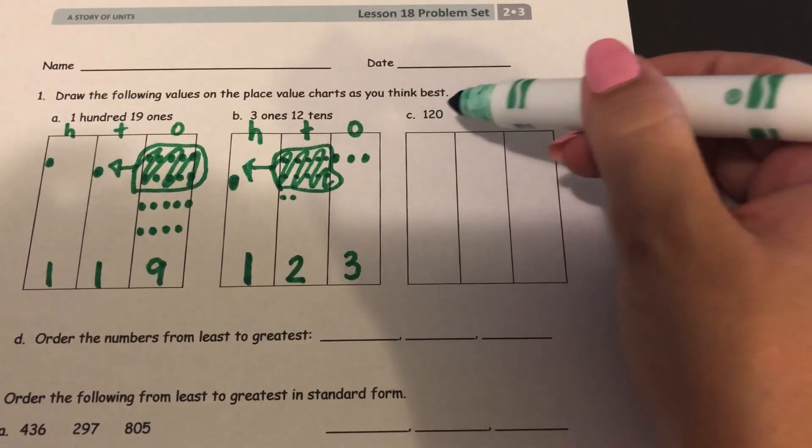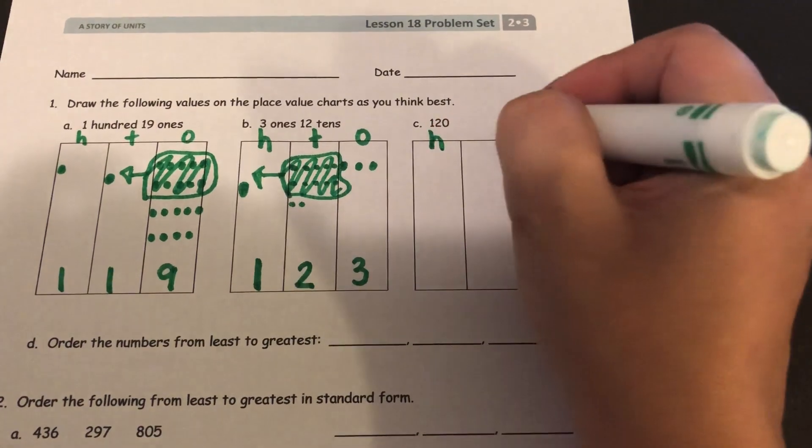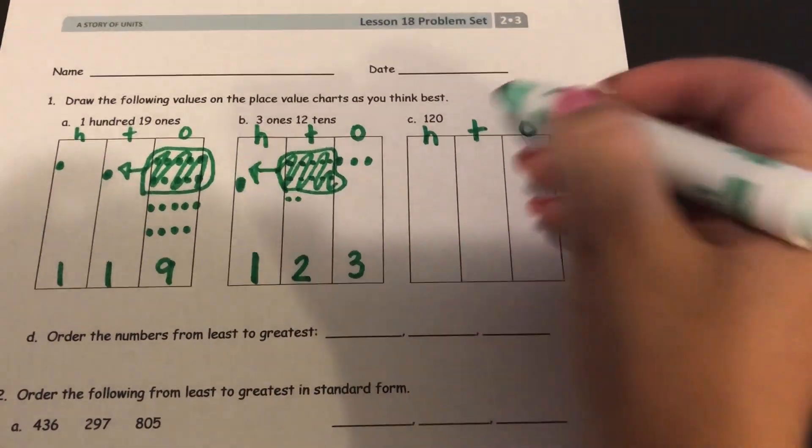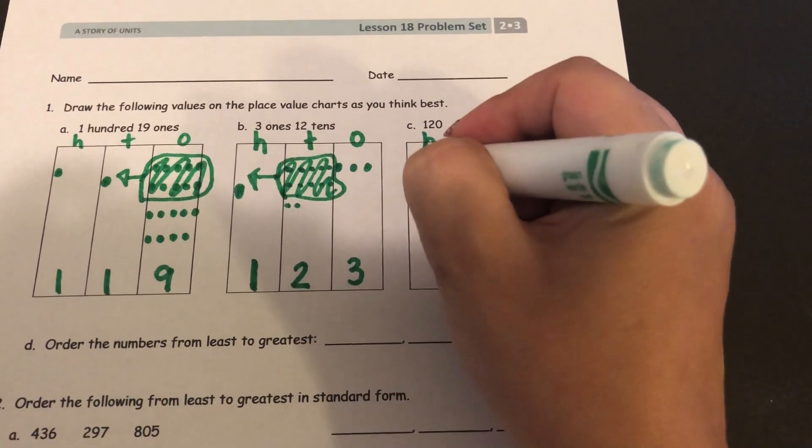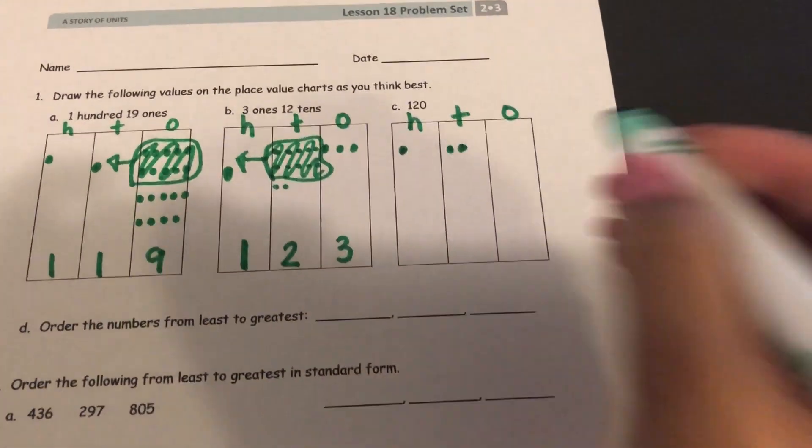And finally, it gives you the number 120. Hundreds, tens, ones. 120 is 1 in the hundreds, and 2 in the tens place.